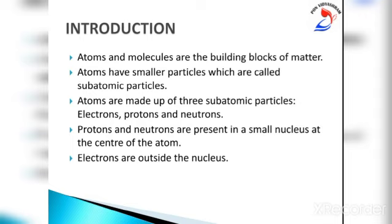Due to the presence of protons, the nucleus has positive charge. Electrons are outside the nucleus. The electrons in an atom revolve rapidly around the nucleus in fixed circular paths called energy levels or shells.